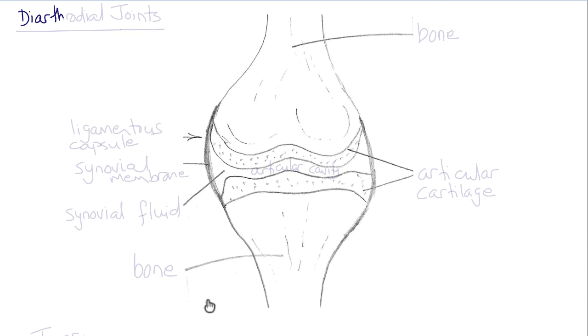So let's take a look at a typical diarthrodial joint between two long bones. So here are the bones here and here.